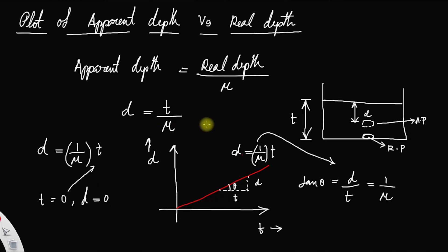The slope of the graph gives the reciprocal of the refractive index. That is the significance of the graph here.